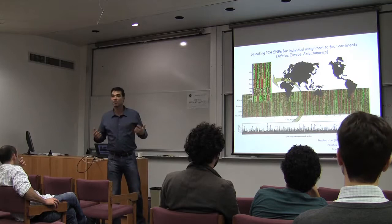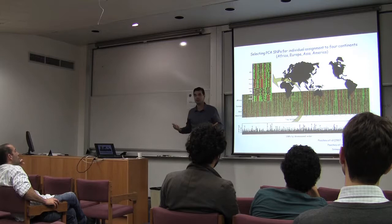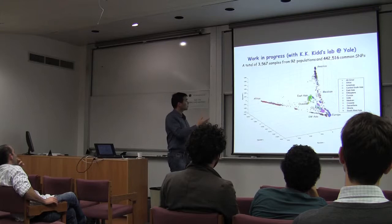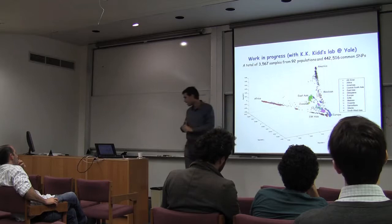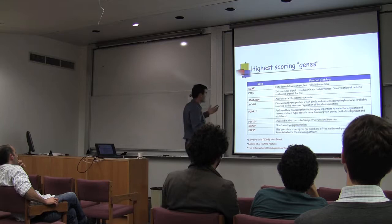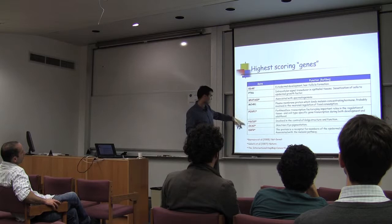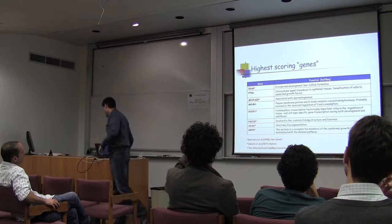From a computer science perspective, this is unsupervised feature selection. We've applied it in a number of other domains beyond SNPs. In ongoing work with Ken Kidd at Yale on a larger population genetics sample, we have functional characterization: among the top genes selected, EDAR is well known to be associated with hair follicle formation, OCA2 is associated with skin color, and several others had been previously identified as candidates for natural selection and other selective pressures.